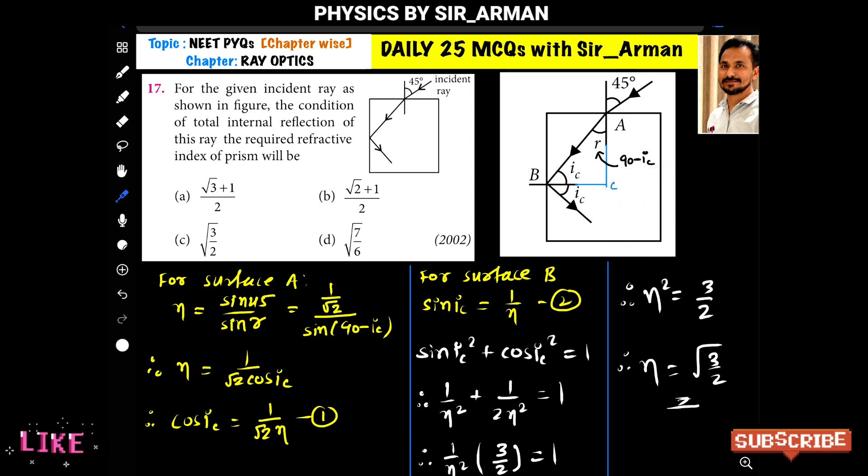Now from trigonometric identities what we know: sin square theta plus cos square theta equals 1. Now sin square ic equals 1 by eta, so it is 1 by eta square because we are squaring on both sides. And cos square ic, so cos square ic, it is 1 by 2n square equals 1.